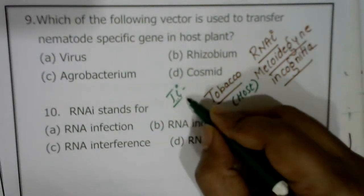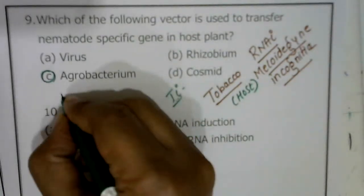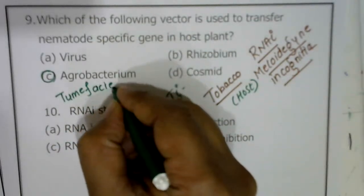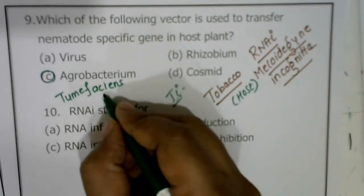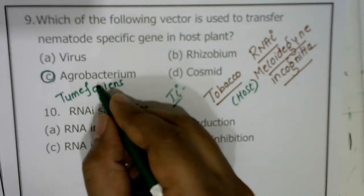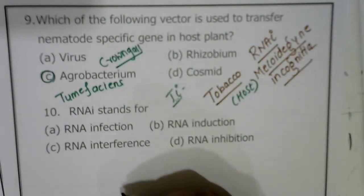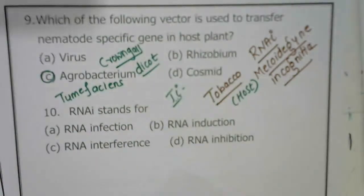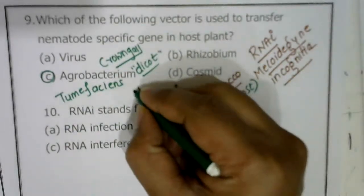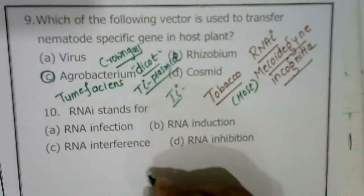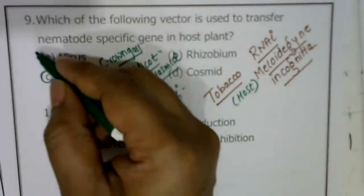Ti plasmid is present in a soil-borne bacterium called Agrobacterium tumefaciens. This bacterium is commonly called the natural genetic engineer. It causes crown gall disease, but only in dicot plants using the Ti plasmid. Ti plasmid is called a mega plasmid because it is the largest plasmid. Question nine's correct answer is C option.